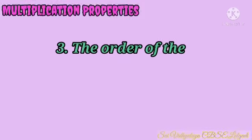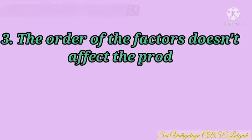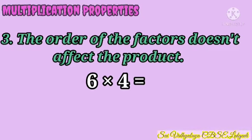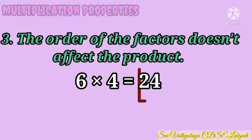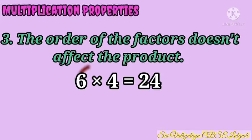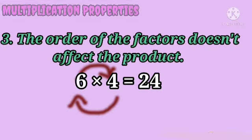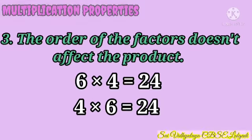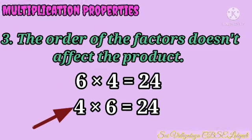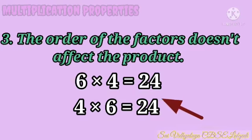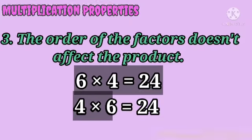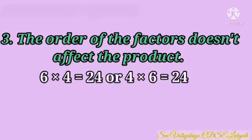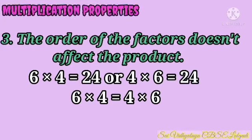Third property: the order of the factors does not affect the product. For example, 6 into 4 is equal to 24 — 6 and 4 are factors and 24 is the product. Now changing the order: 4 into 6 is also 24. The product remains the same. Therefore, 6 into 4 is equal to 4 into 6.